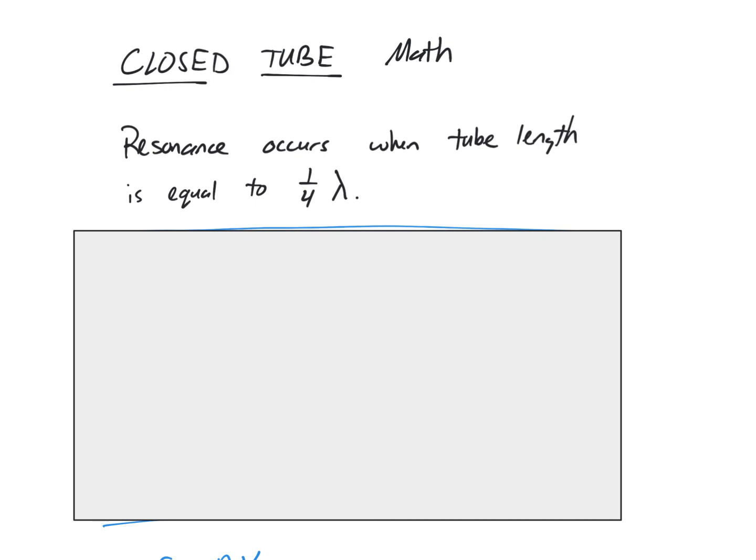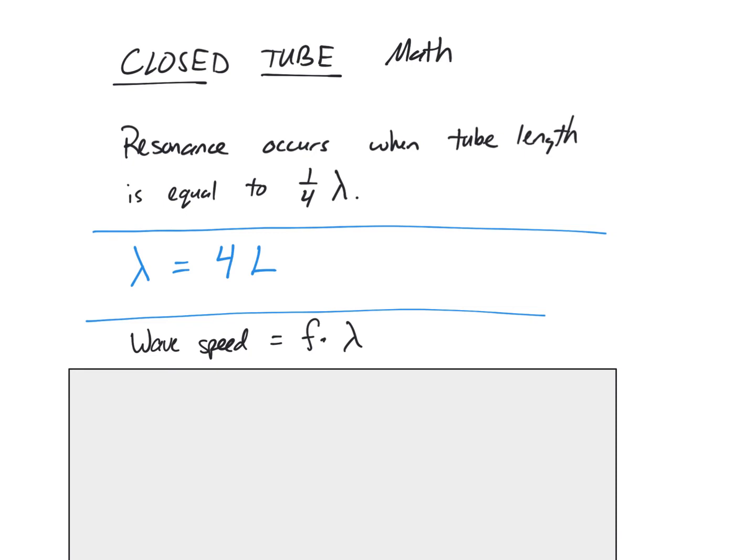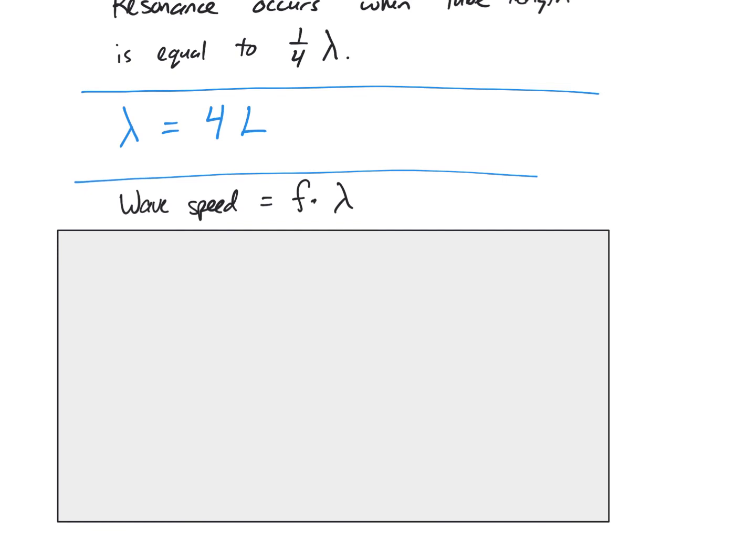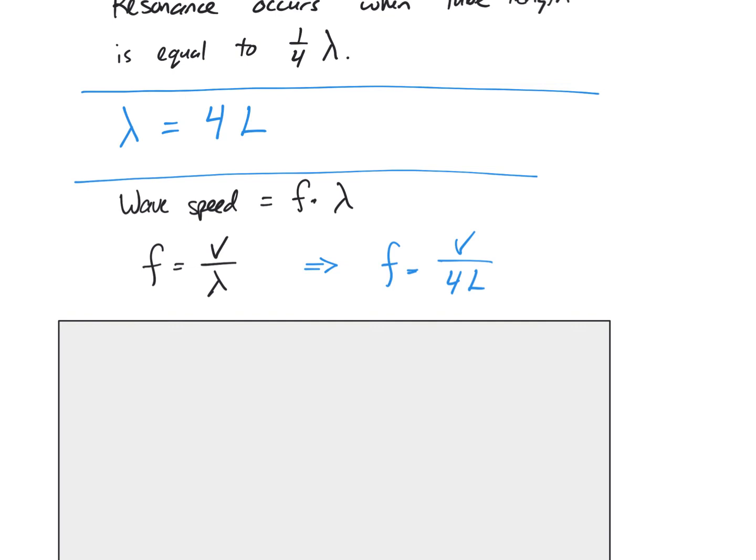I now want to explain how to understand this mathematically. If we know that resonance occurs in a closed tube at a one-quarter wavelength, then we can translate this to equations that we're familiar with. Another way of saying this is that one wavelength is equal to four times the length of the tube. And then if I translate this back to wave speed, I know that to calculate wave speed, I take the frequency times the wavelength.